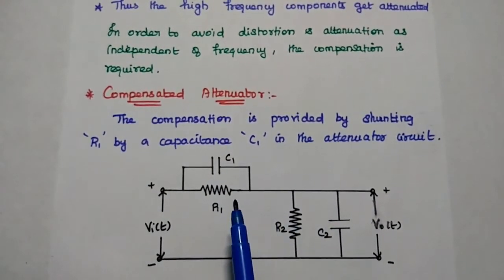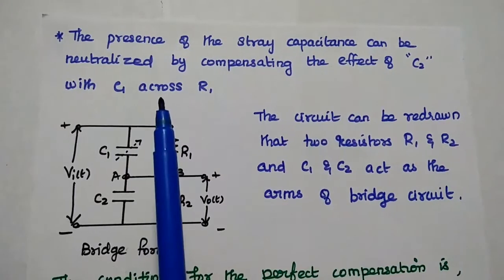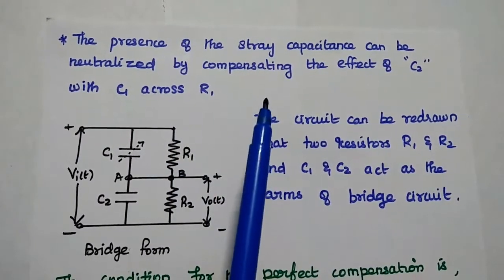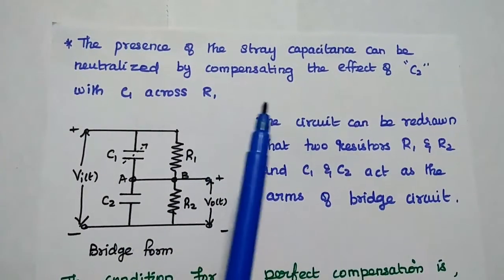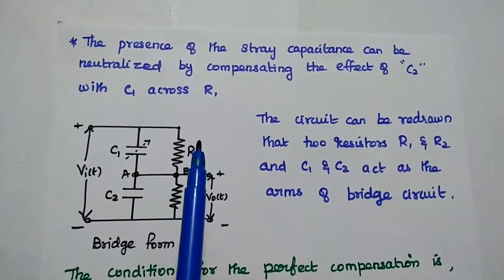We can achieve this compensation when R1 C1 equals R2 C2. Here the presence of stray capacitance can be neutralized by compensating the effect of C2 with C1 across the R1 value.